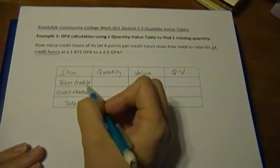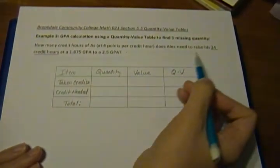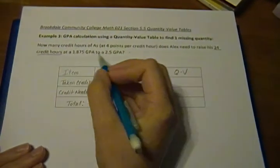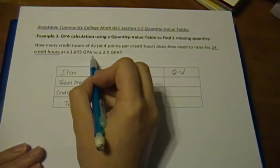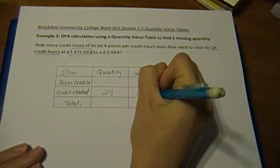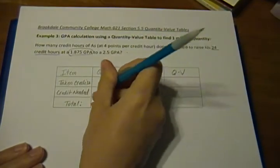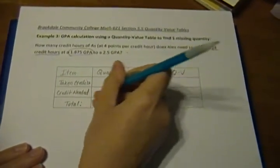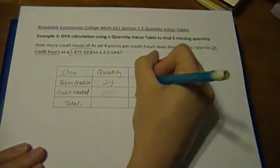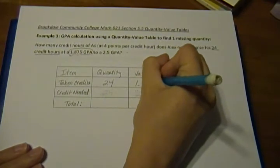So taking credits, quantity, how many credits has he taken? He's taken 24 credit hours. And the value is his GPA. So his value here is 1.875. Sorry, I wrote that in the wrong box. So his taking credits is 24, and his value is 1.875.